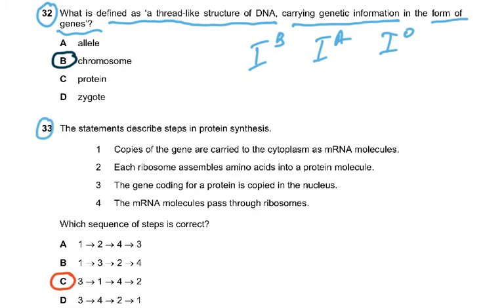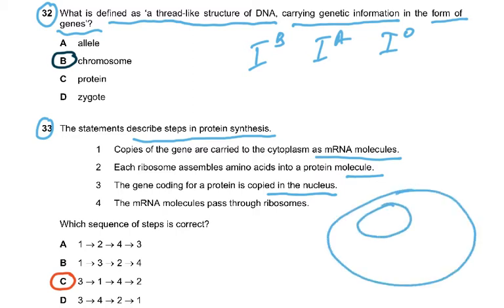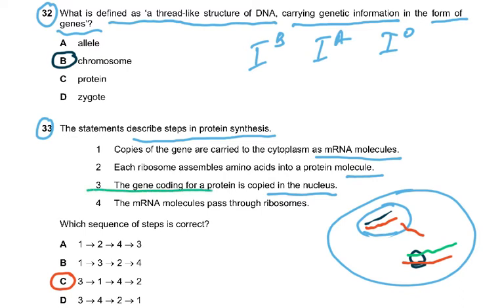Question 33 describes steps in protein synthesis. In a cell, the DNA is double-stranded. First it unzips, one strand is copied as mRNA — this is transcription. The mRNA then leaves the nucleus, attaches to a ribosome, and is translated into a protein.